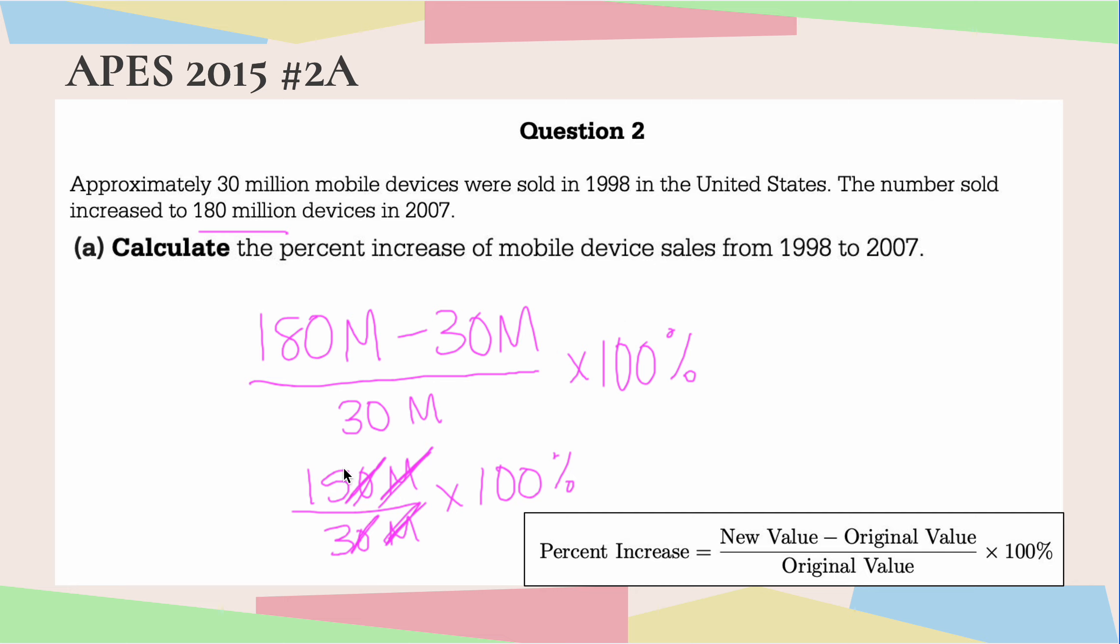which is 5. So 5 times 100% gives me 500%. So that tells me there was a 500% increase of mobile device sales from 1998 to 2007.